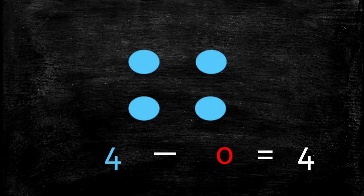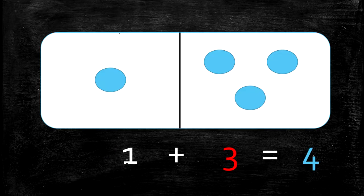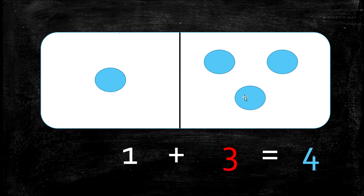Our next addition fact is 1 plus 3 equals 4. Say that with me: 1 plus 3 equals 4. How many do we have in the first box? 1. How many do we have in the second box? 1, 2, 3. How many do we have altogether? 1, 2, 3, 4. Because 1 plus 3 equals 4.